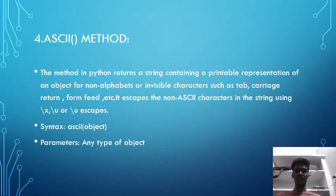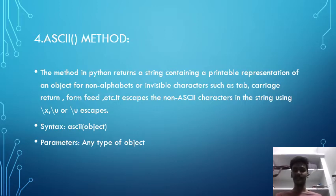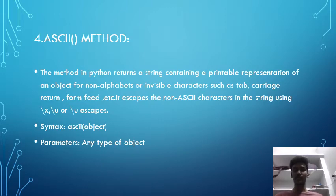The fourth one is ascii() method. This method in Python returns a string containing a printable representation of an object. For non-alphabetic or invisible characters such as tab, carriage return, and form feed, it escapes the non-ASCII characters in the string using \x, \u, or \U escapes. The syntax is ascii(object).